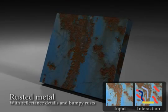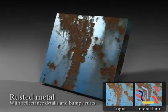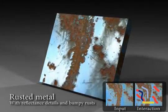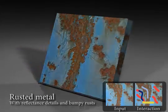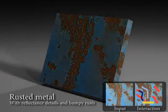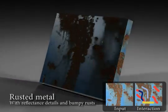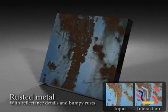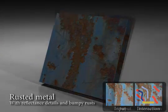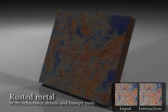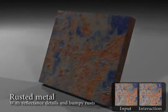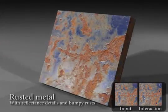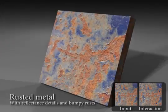Here, we show rendering results generated by our method. Our results cover a wide variety of material types, including natural surfaces like metals, woods, stones, and leathers, as well as man-made textiles, papers, and concretes. For each result, the input image and the strokes drawn by the user are shown on the bottom right.